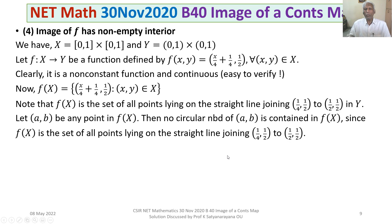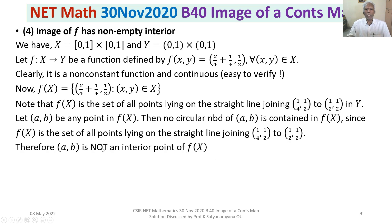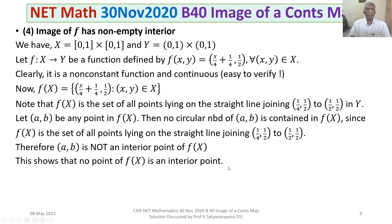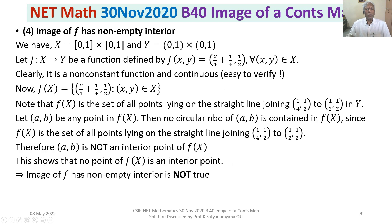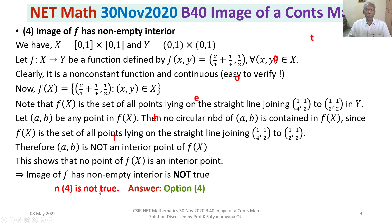Now, let (a, b) be any point in f(X). Since f(X) lies on a straight line, no circular neighbourhood of (a, b) is contained in f(X). Therefore (a, b) is not an interior point of f(X). This shows no point of f(X) is an interior point, so the image of f has empty interior — Option 4 is not true. Therefore our answer is Option 4.